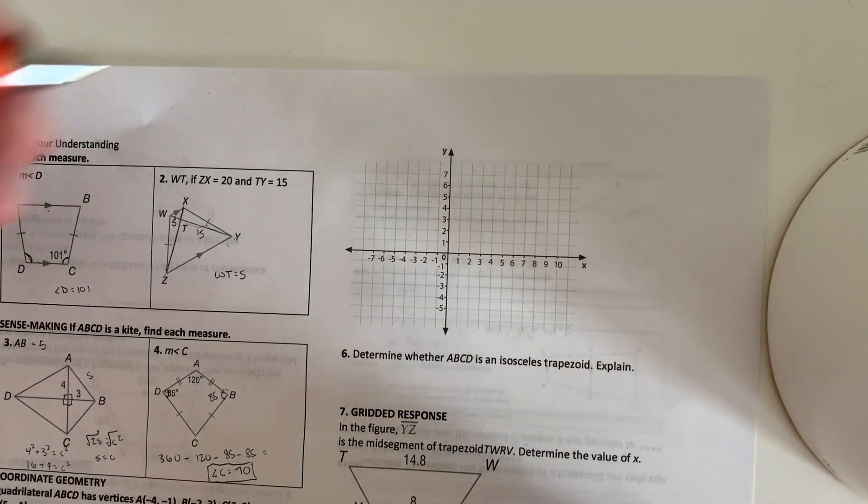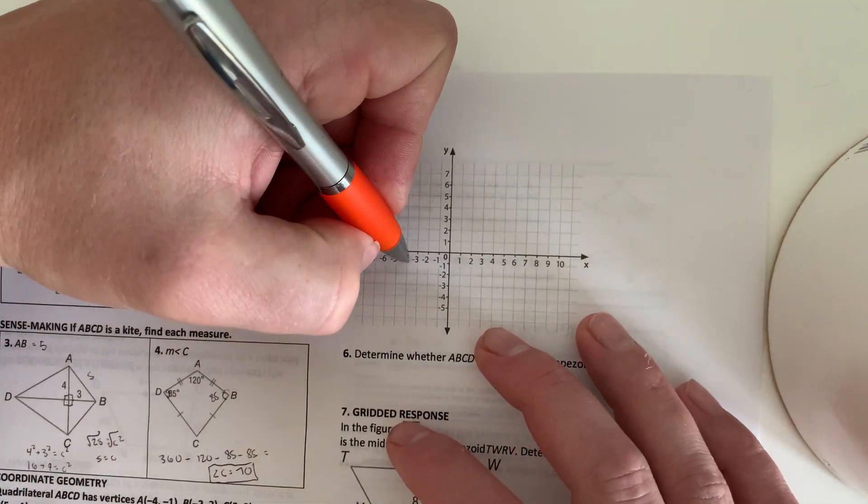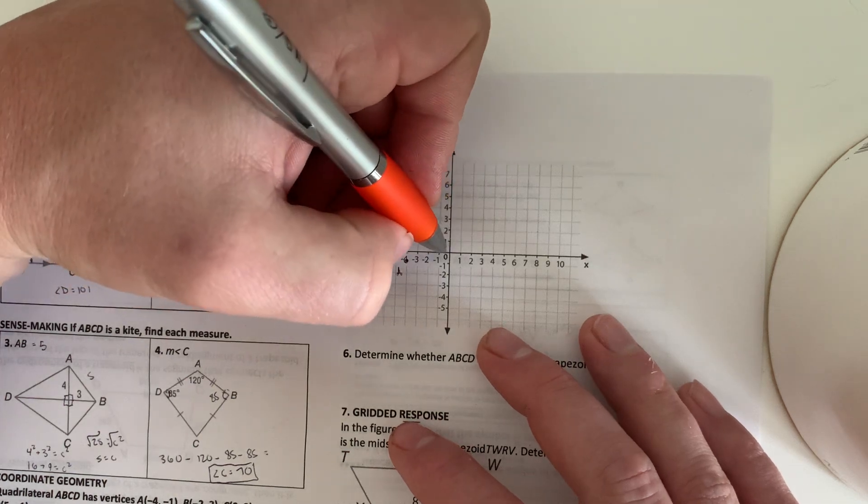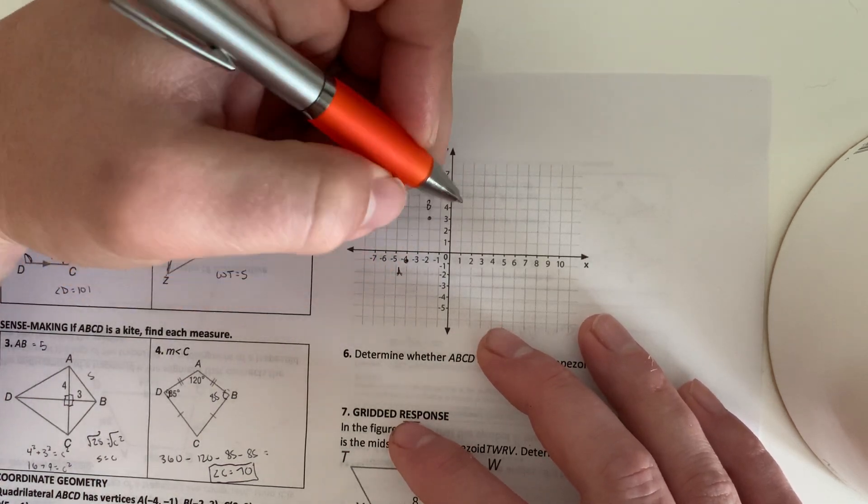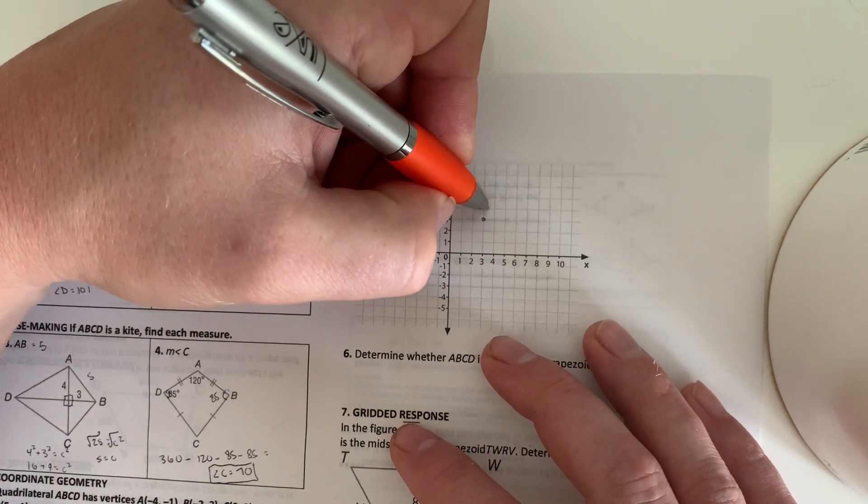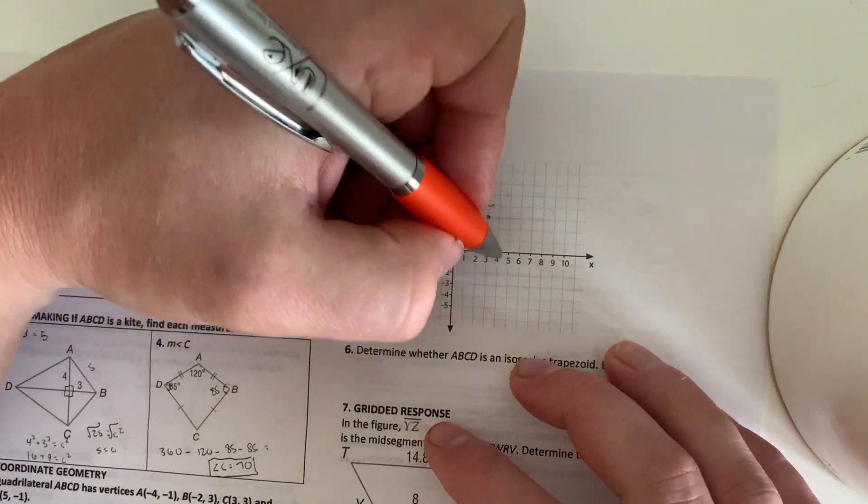So we got to graph that first. So negative 4, negative 1 is A. B is at negative 2, 3. C is at 3, 3. And D is at 5, negative 1.